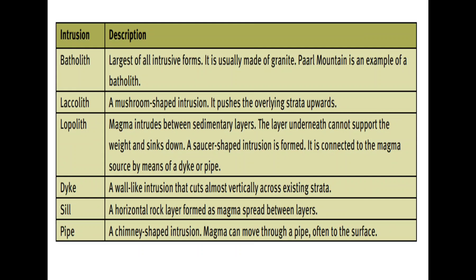The batholith is the largest of all intrusive forms. It is usually made of granite, and an example of it would be Pearl Mountain, which is an example of a batholith.